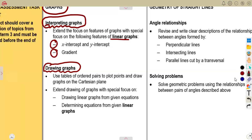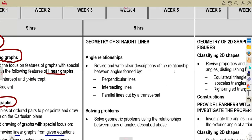Then we also need to consider the drawing of these graphs. Drawing of the straight line using table of ordered pairs to plot points and draw graphs on the Cartesian plane. Extend the drawing of graphs with special focus on drawing linear graphs from given equations. If you are given an equation, you must be able to draw a linear graph. And if you are given a linear graph, you must be able to determine its equation.